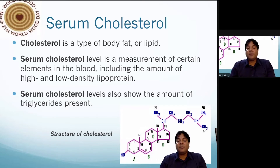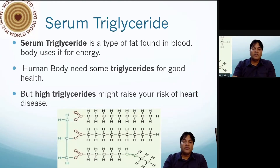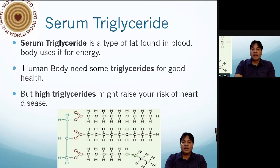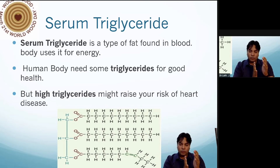Serum cholesterol is the third parameter tested in lipid profiling. Cholesterol is a type of body fat or lipid, and serum cholesterol is a measure of high or low density lipoproteins present in the blood. It cannot be in high quantities. Serum triglycerides are fats found in the blood that the body uses for energy. When an alcohol combines with three fatty acids, it becomes a triglyceride, which also increases the risk of heart disease if present in high quantities. Whether LDL, HDL, serum triglycerides, or cholesterol, all must be at optimum levels to prevent hypertension, high blood pressure, and stroke.